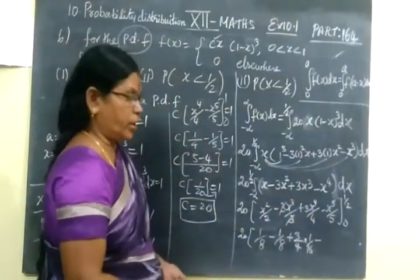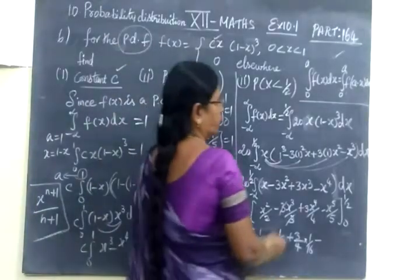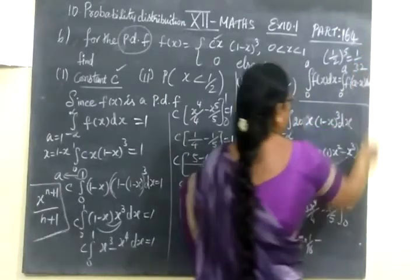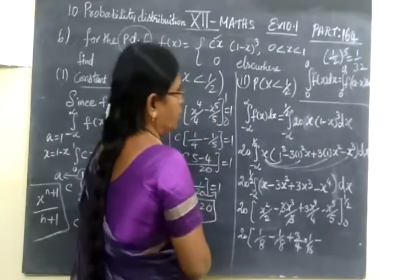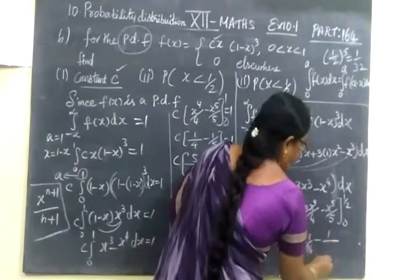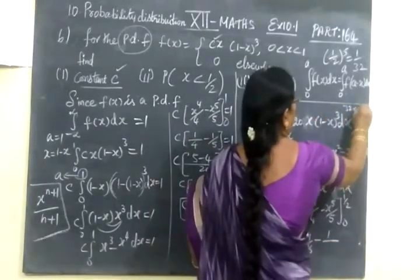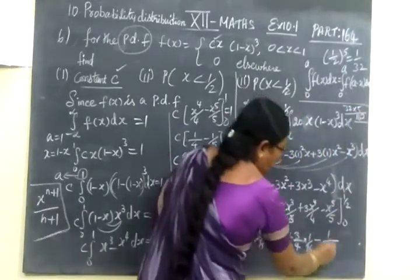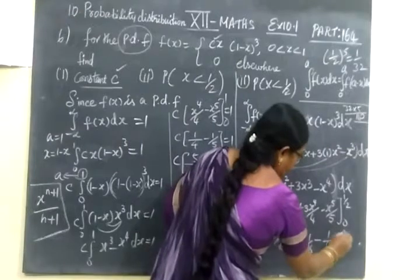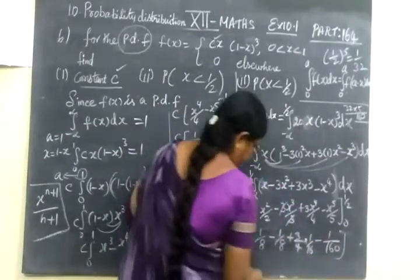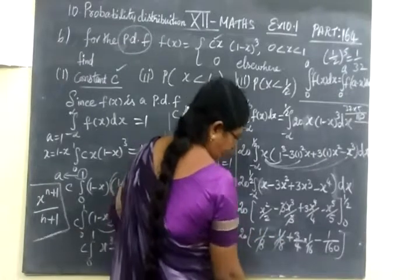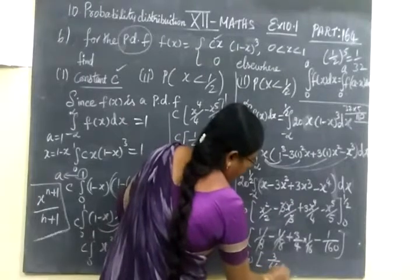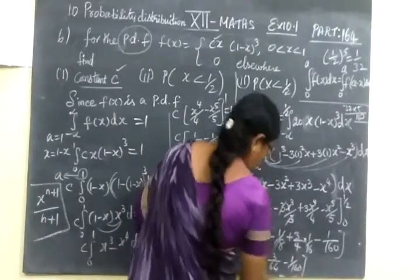Then minus here also substitute half. So half power 5, 1 by 32. Here half power 5 equal to 1 by 32. Already in the denominator 5 you will get. So 1 by here you just write 32 into 5, 160. So here you write 160. Now this plus 1 by 8 minus 1 by 8 cancel. So here you write 1 by 64 minus 1 by 160.